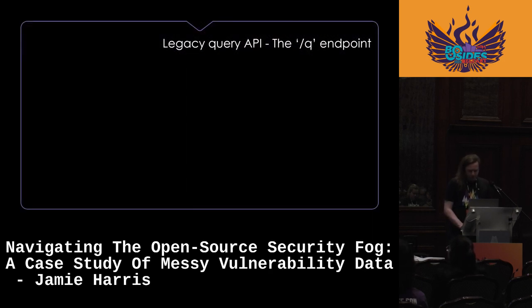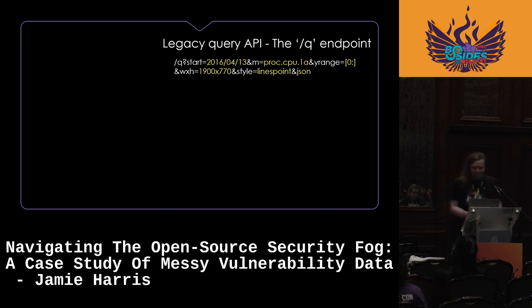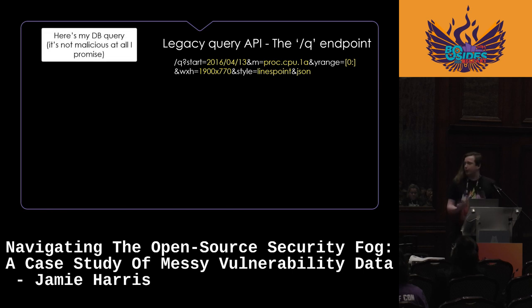The vulnerability is in the legacy query API — specifically an endpoint called the Q endpoint. What it allows is for a user to ask OpenTSDB for data for a particular metric they're tracking, with various query filters applied. The component returns graphable plot data for that query. The plot part is handled by a library called GNUplot. Essentially, the user says: here's my database query, here's the data I want to get for the particular metric I'm tracking. Definitely not malicious at all.